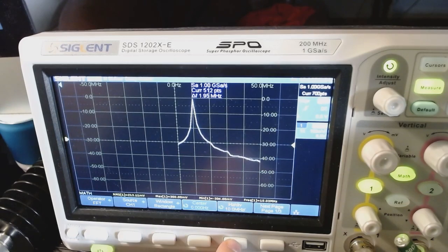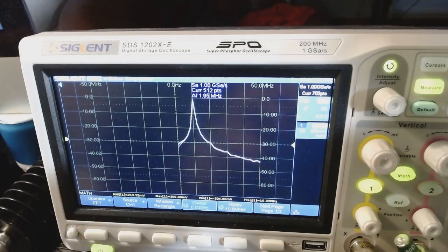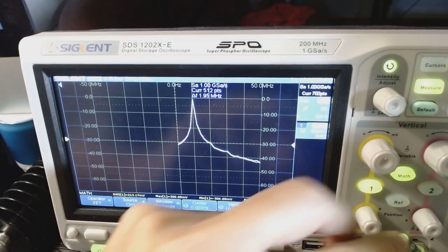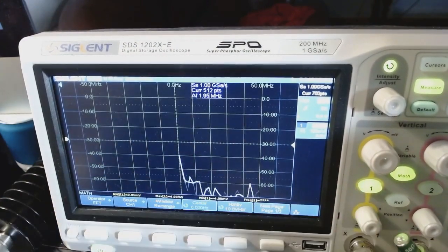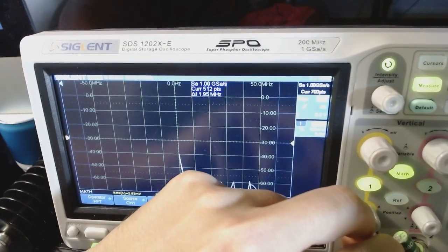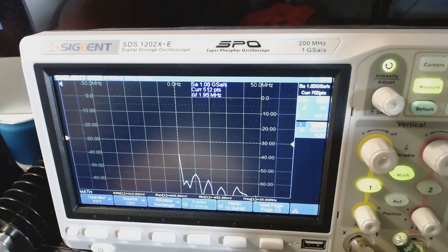So let me show you instead, if I connect a square wave generated by my signal generator. So not the spectrum analyzer, but my 30 megahertz signal generator. And I'm going to generate, let's say, 20 megahertz square wave.